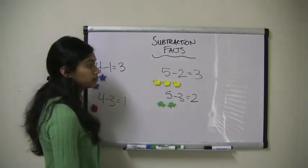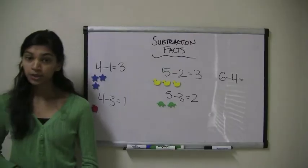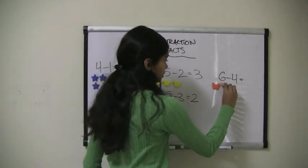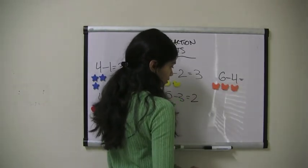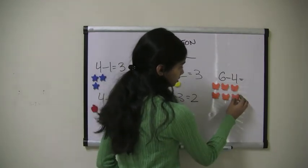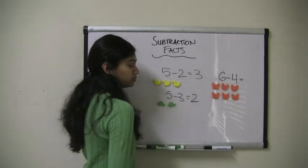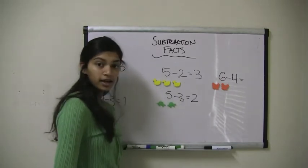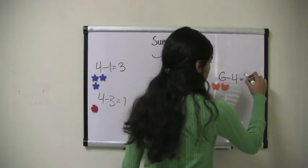Let's try one more problem. Let's say we had 6 minus 4. So let's say I had 6 butterflies: 1, 2, 3, 4, 5, 6. And I want to take away 4 of them. So I take away 1, 2, 3, 4. And now I have 1, 2 butterflies left. So 6 minus 4 equals 2.